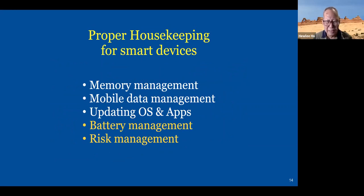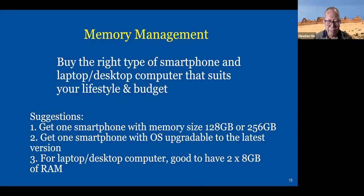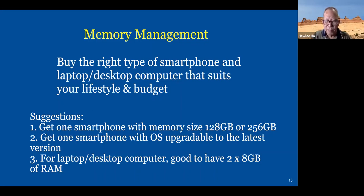These are mainly the main points of keeping your smart device properly. I keep battery management and risk management to part two of the talk. Today I will focus on these three. Memory management: if you buy a smartphone, it's good to go around 128 GB or 256.